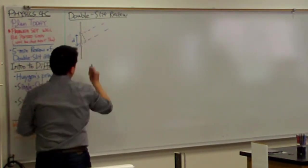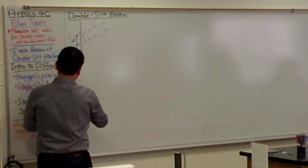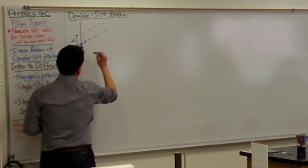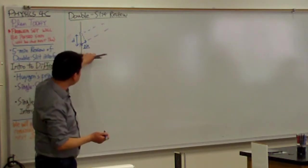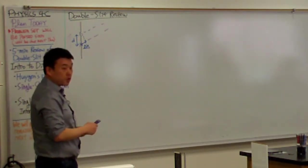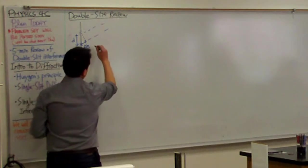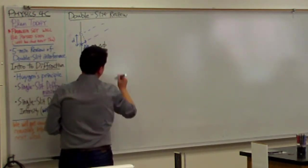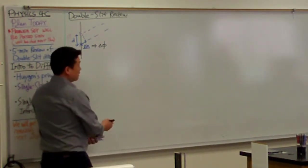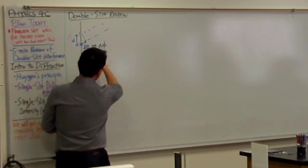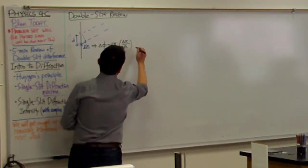The key thing in analyzing this was looking at the path length difference between the two paths from the two slits. This is the geometry that you have seen last time. It's this path length difference that we used to help us analyze when we get constructive interference and when we get destructive interference. This path length difference turns into a phase difference, and phase is going to be the key idea as we go through the rest of interference and diffraction for the next week.